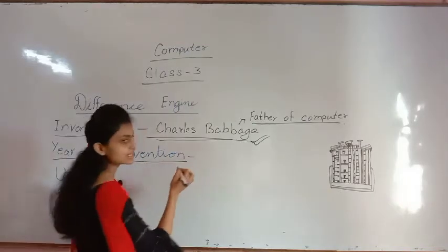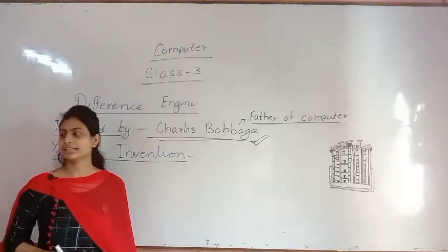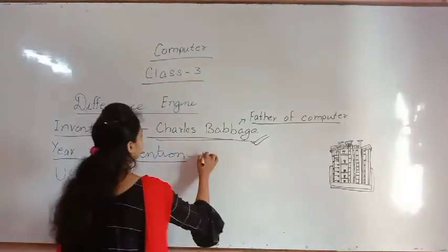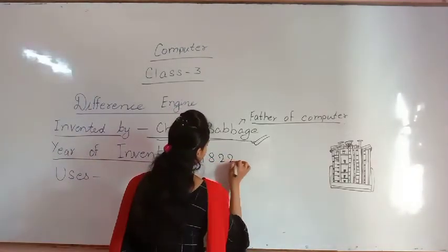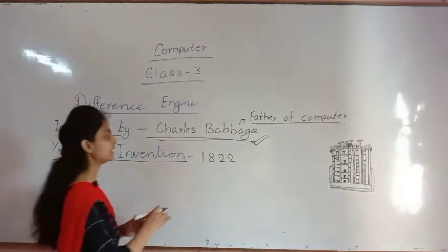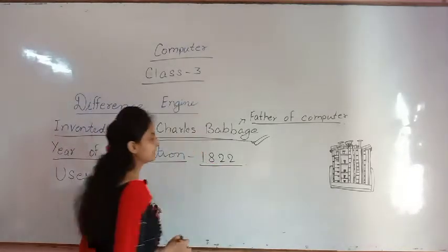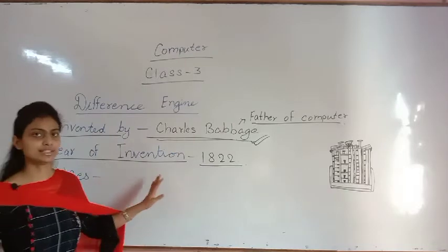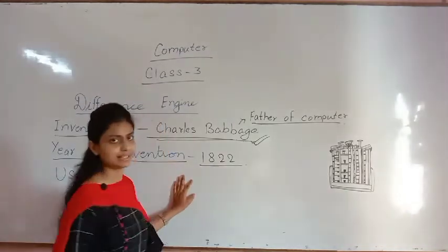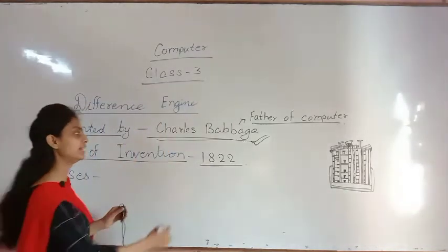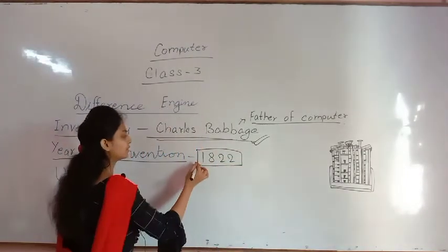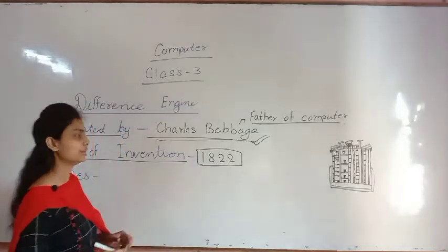When was the difference engine invented? The year of invention of the difference engine was 1822. In the year 1822, this difference engine device was invented.